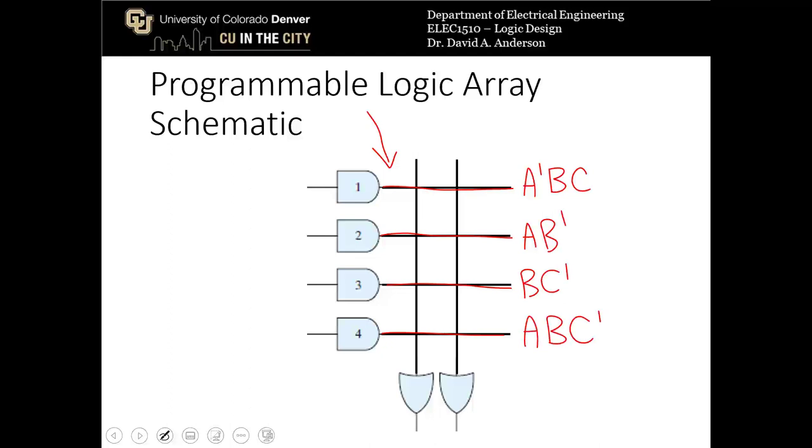Now these product terms can act as inputs to OR gates right here to create sum of product terms. So let's say now I create three connections right here. My first sum of products term will be A prime, B C, that was the first connection, or A B prime, that's the second connection, or B C prime.